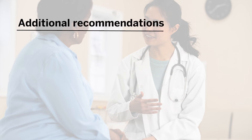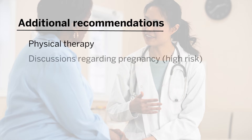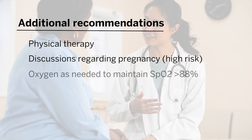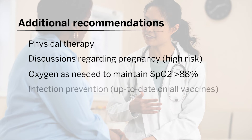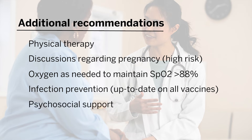In addition to starting therapy followed by a repeat right heart catheterization to monitor hemodynamics, there should also be a discussion with patients regarding pulmonary rehabilitation or physical therapy, avoidance of pregnancy given they are at high risk for complications, avoiding low oxygen levels — defined as less than 88% — as hypoxemia can cause increases in pulmonary vascular resistance, infection prevention, as well as making sure that patients have good psychosocial support.